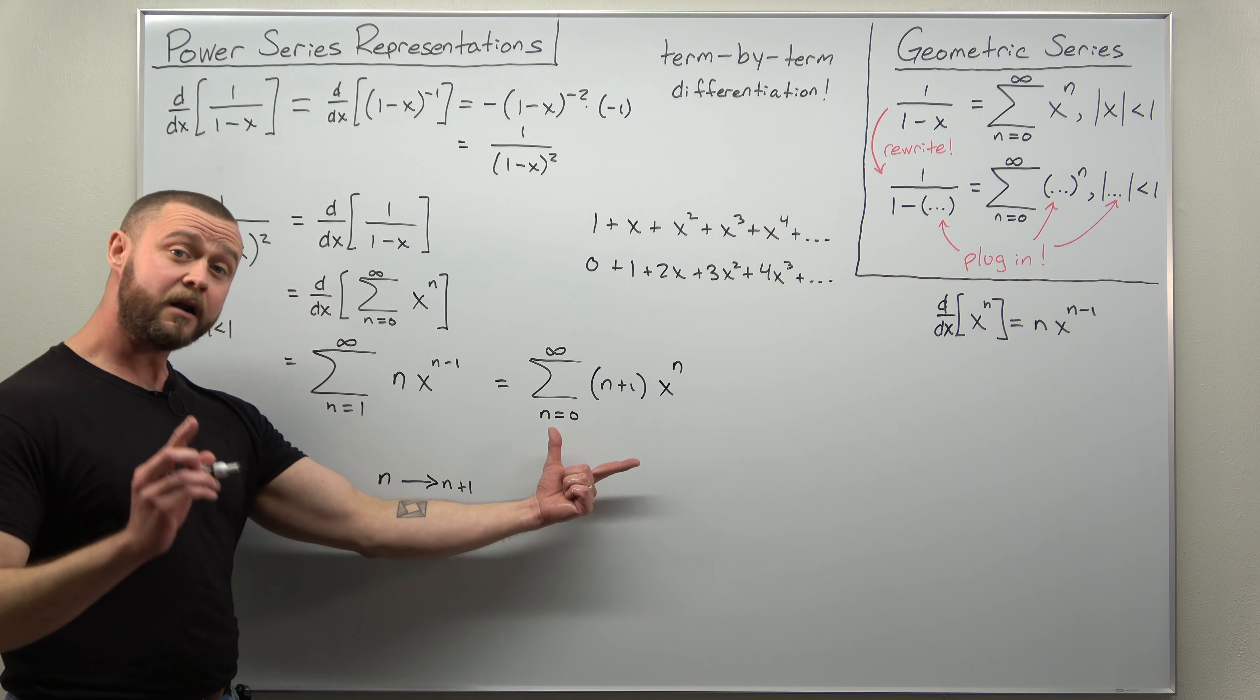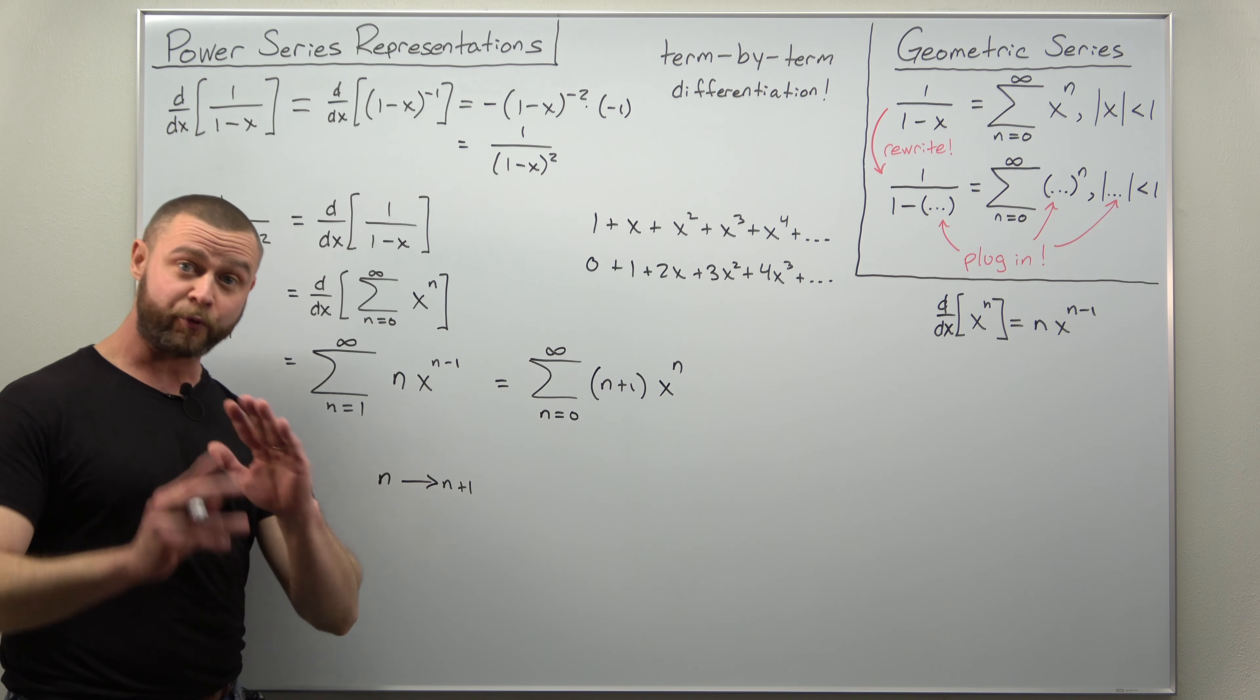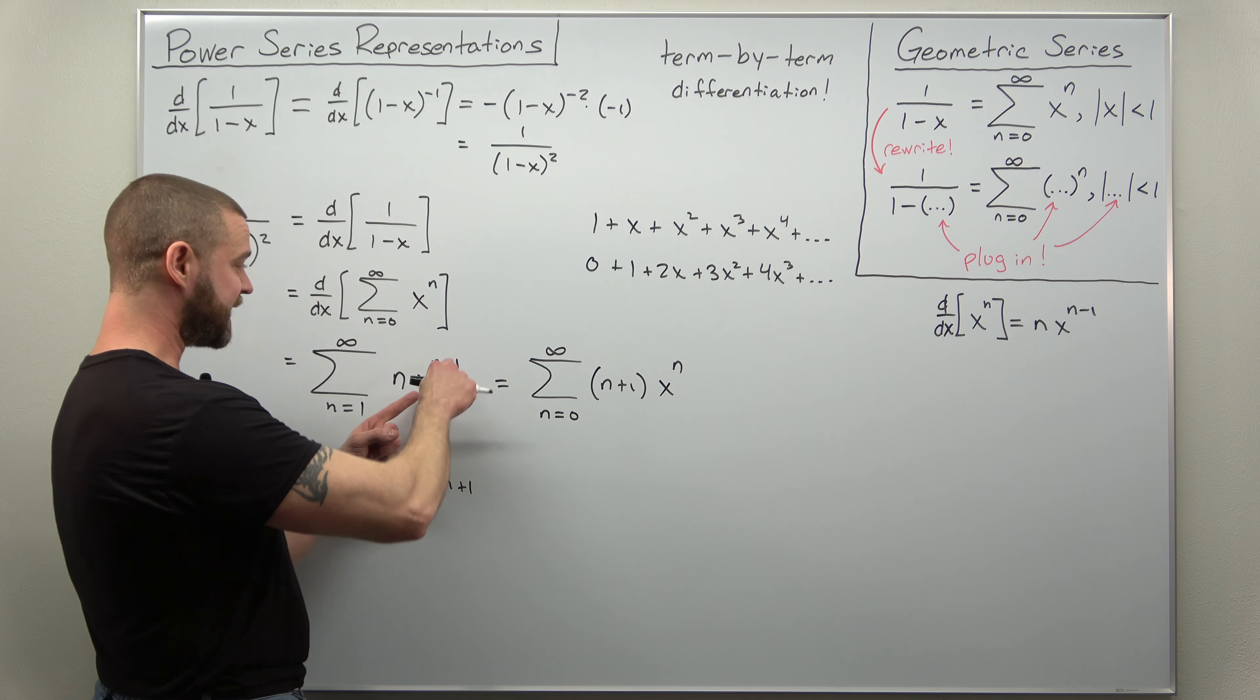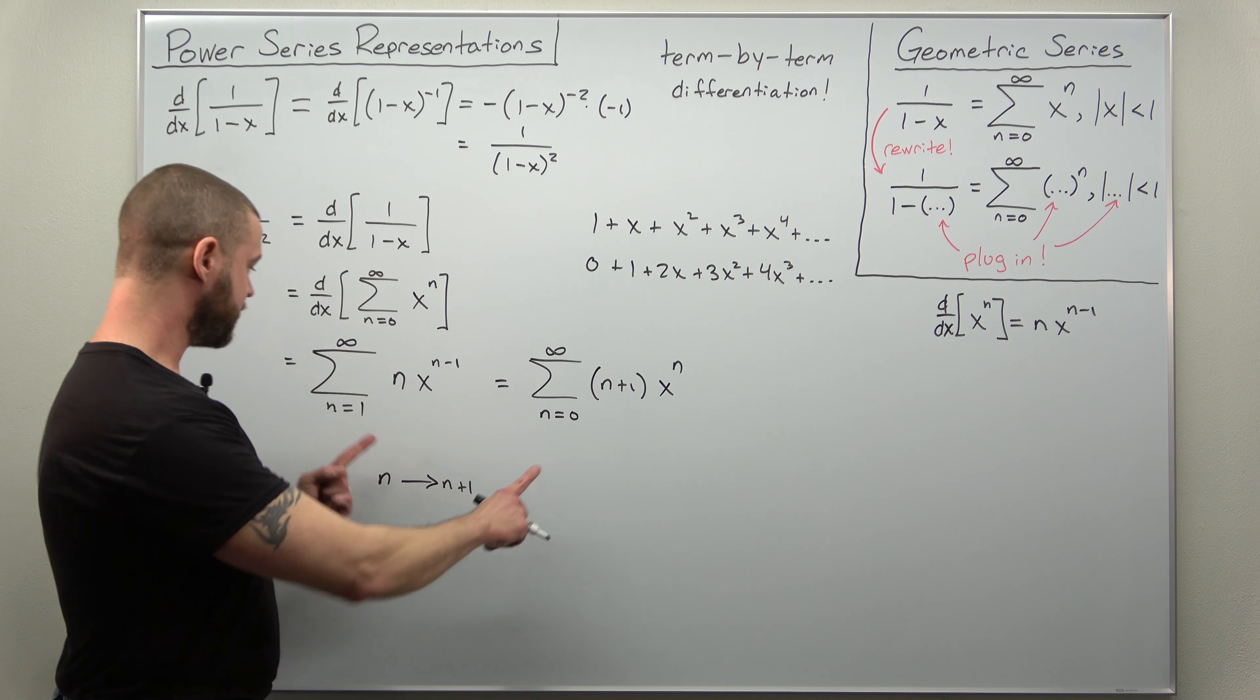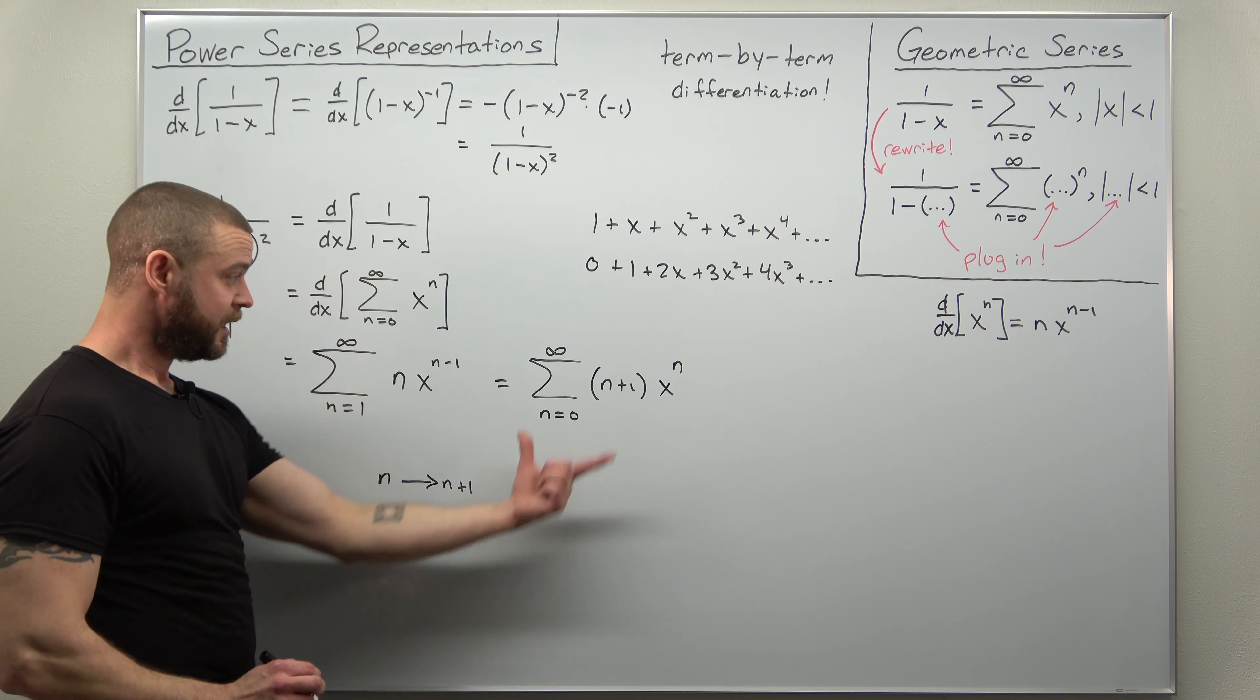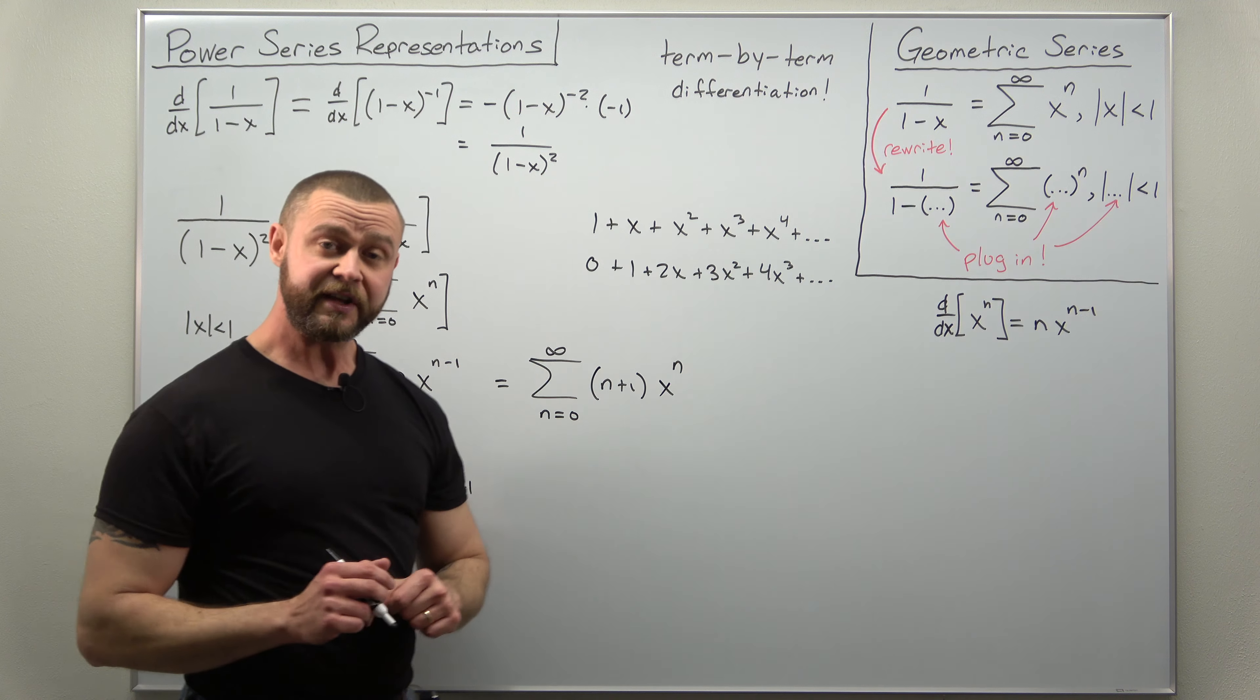And that is an equivalent power series representation. I can't say either of these is any more right than the others, but it's mainly just aesthetics for how you want to write it here: x to the n minus 1 or x to the n. Notice here your starting indices are different but both these versions give the same terms. Definitely check that by writing out terms to confirm they give the same terms.